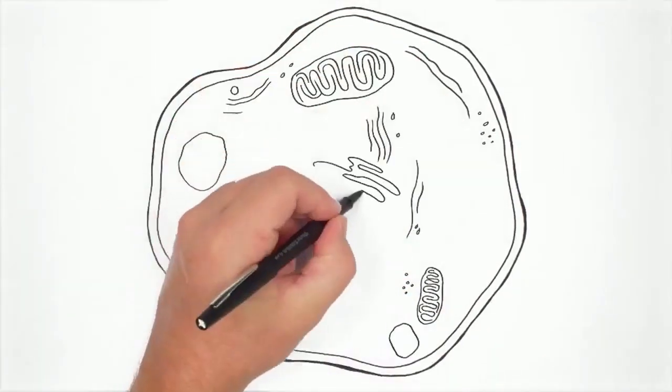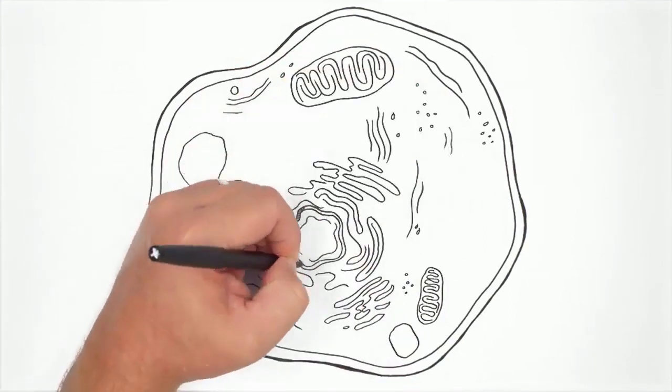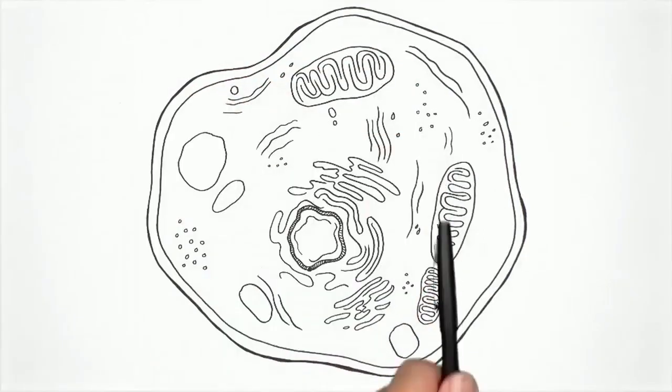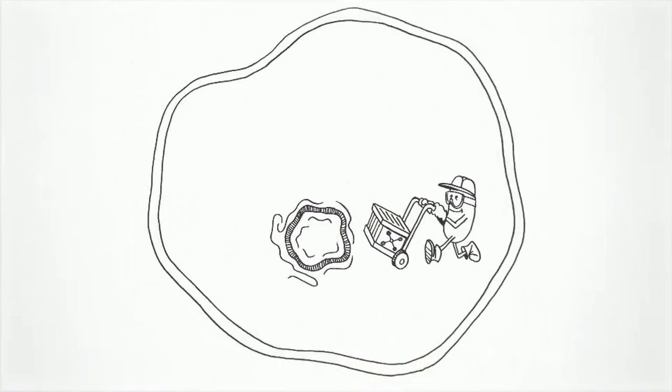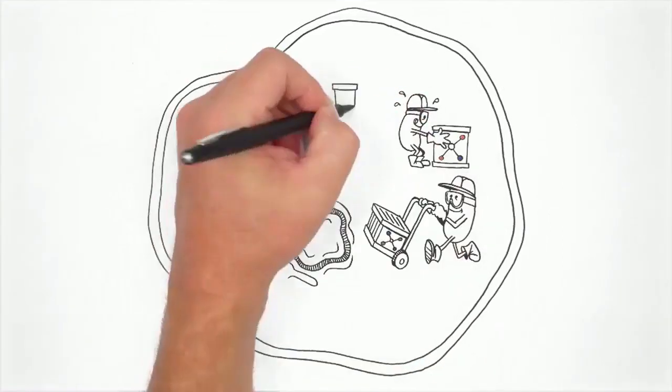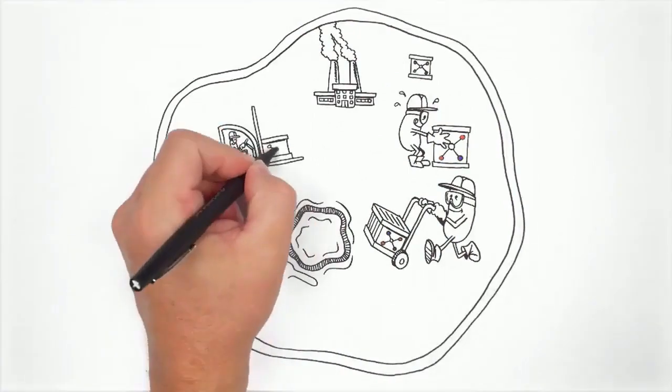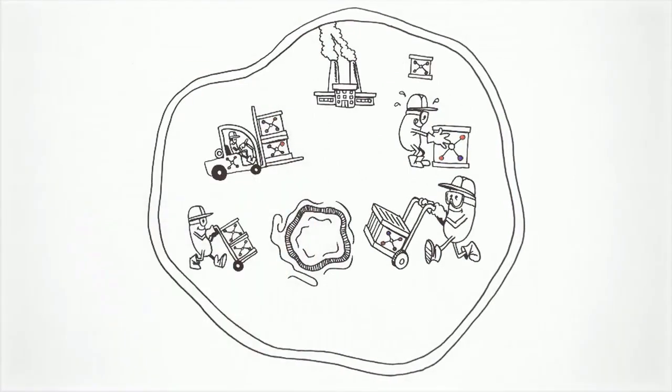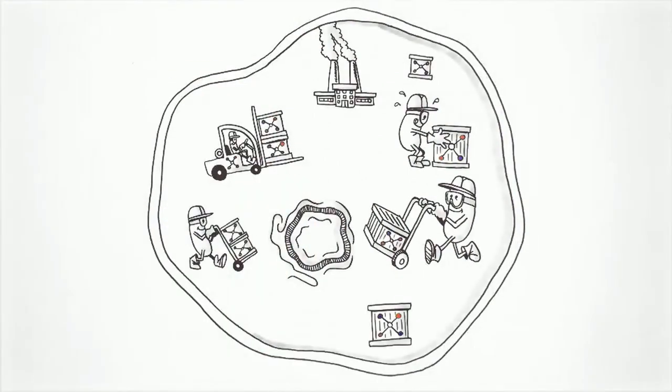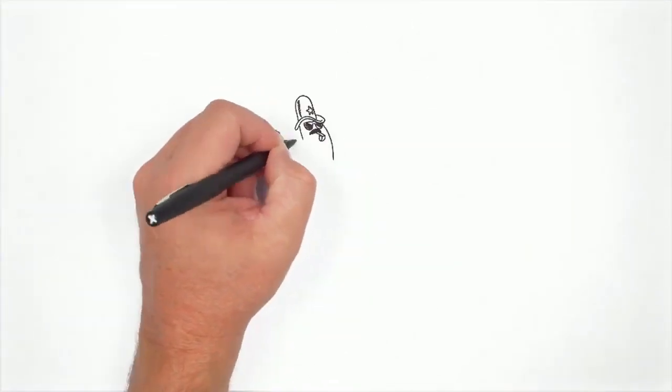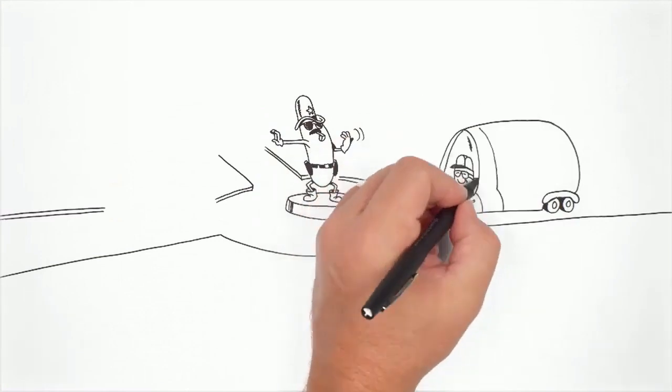This fuel, known as ATP, is actually created by workers inside the cell called mitochondria. Mitochondria are so vital and important that a single cell can have thousands of these little workers. In fact, it is estimated that half of the dry weight of the human body is made up of mitochondria.